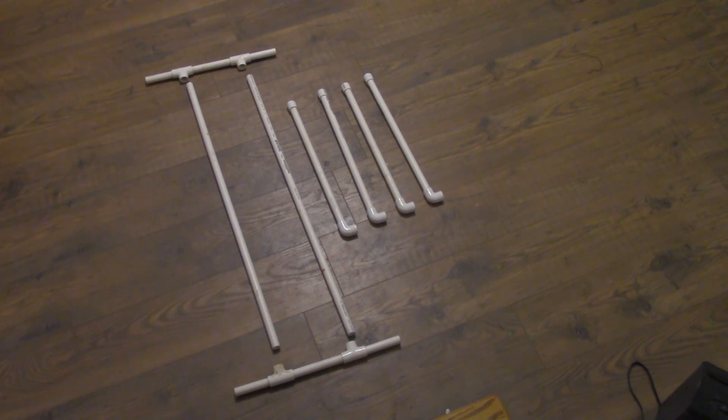So the first thing you're going to do is take two tees and put a piece of six inch PVC between them. Then on the other side of those tees you're going to put a four inch piece of PVC on each side. What you're doing here is building the rails for your 36 inch slide posts.